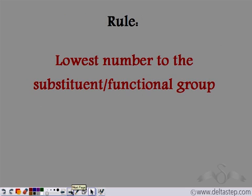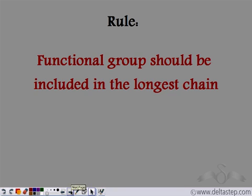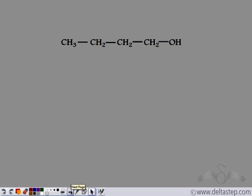The rules remain the same: we give the lowest number to the substituent or the functional group, and the functional group should always be included in the longest carbon chain. Let's take an example. We are given this organic compound — let's try to find its IUPAC name. The first step remains the same: we have to find the longest carbon chain.